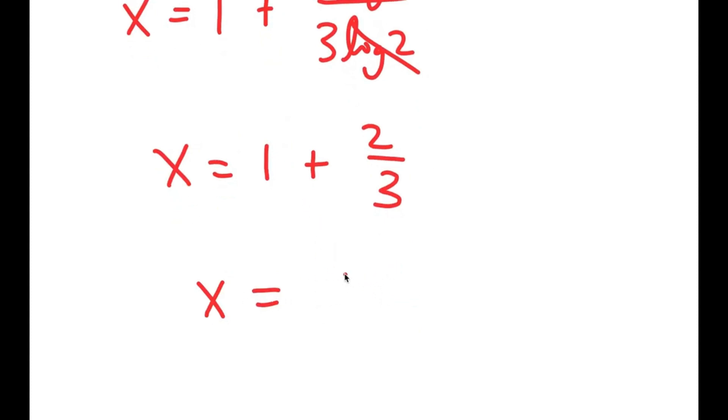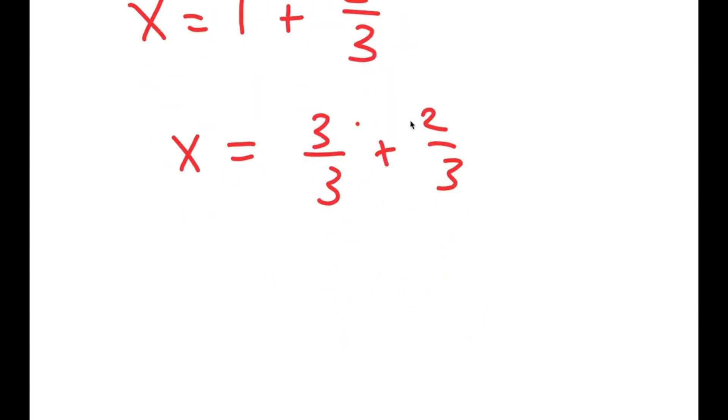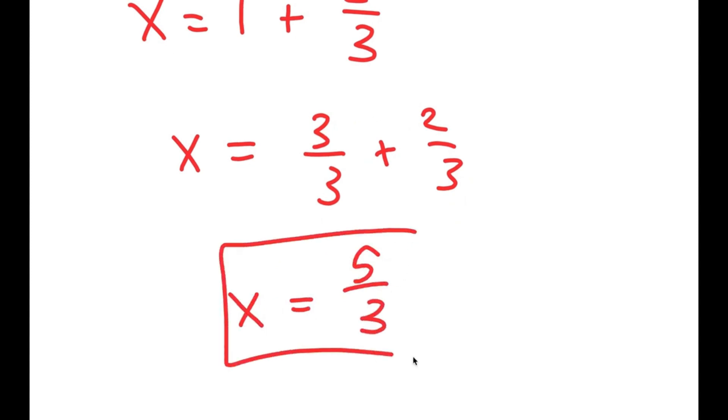1 is the same thing as 3 over 3, so 3 over 3 plus 2 over 3 equals 5 over 3. So x is 5 over 3.